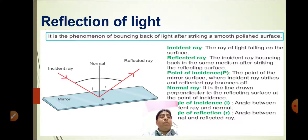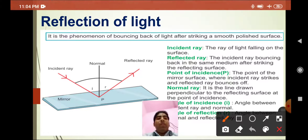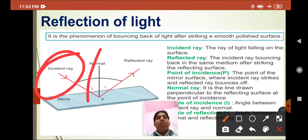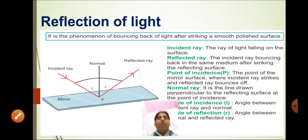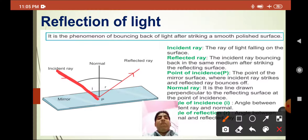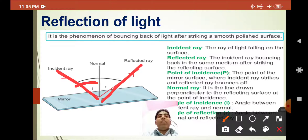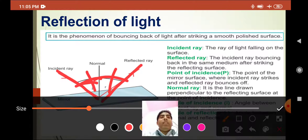Here I have shown you the reflection of light — the phenomenon of bouncing back of light after striking a smooth polished surface. This is the incident ray, this is the normal, this is the reflected ray, and this is the mirror. When the incident ray falls on a mirror, it is reflected back at the same angle. The angle between the incident ray and the normal is equal to the angle made by the reflected ray and the normal.